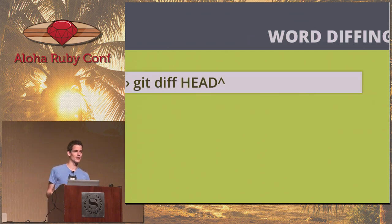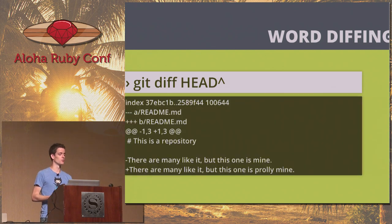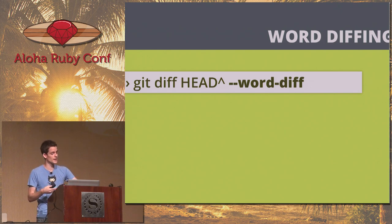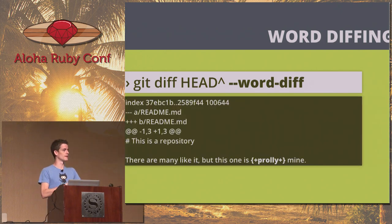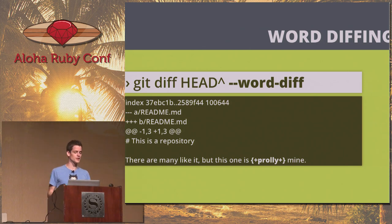Word diffing — I do a bunch of writing on my blog, and diffs are horrible at plain English prose. If you add one word, git says the whole line changed. But if you run the same command with --word-diff, it shows you a separate diff highlighting just that particular word change. I use this mostly with long-form prose, but it works for code too.